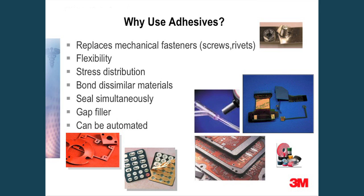So why would you use an adhesive? Adhesives can replace mechanical fasteners by reducing stress concentration at screws, rivets, and holes, bond dissimilar materials for thermal expansion and contraction, bond and seal preventing leaks, and can be automated to increase your productivity and improve your overall cost and process.